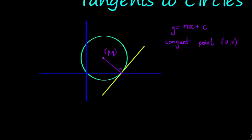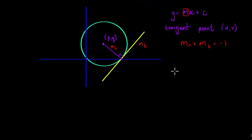Now if I have these values (u,v) and (p,q), I can go and find the gradient of the tangent line by remembering that if I can find the gradient of the radius, I can find the gradient of the tangent by keeping in mind that when gradients are perpendicular, I can multiply the gradients to get negative one. And we looked at that in previous videos.